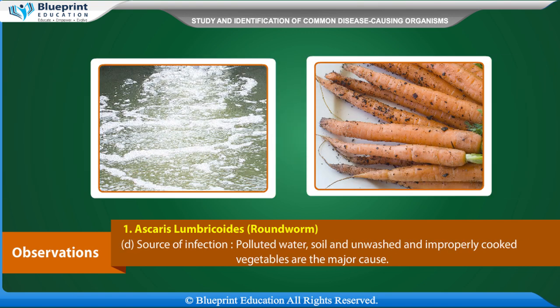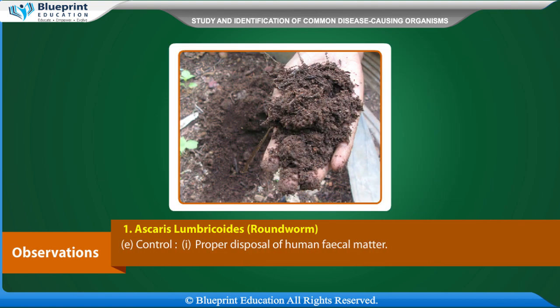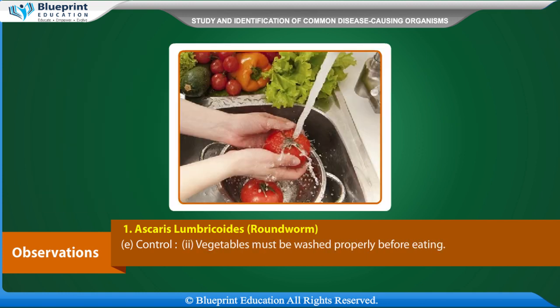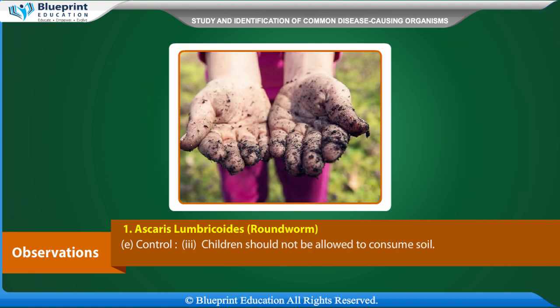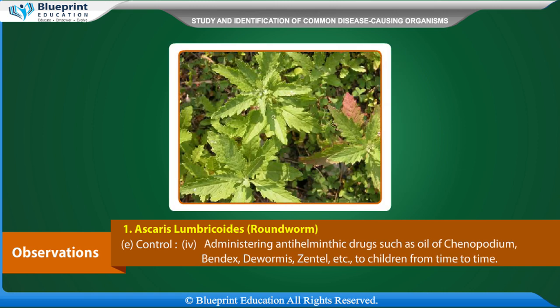Disease caused: Ascariasis, more common in children. Source of infection: polluted water, soil, and unwashed and improperly cooked vegetables are the major causes. Control: Proper disposal of human fecal matter. Vegetables must be washed properly before eating. Children should not be allowed to consume soil. Administering anti-helminthic drugs such as oil of chenopodium, bendex, devormis, and zental.